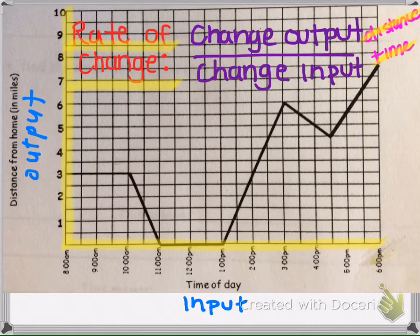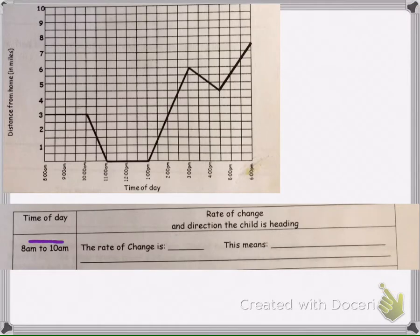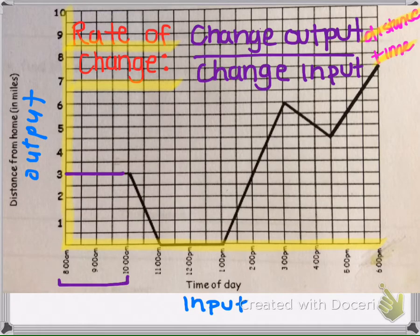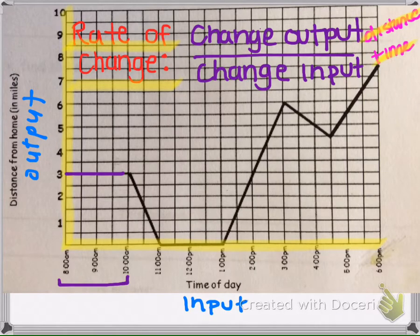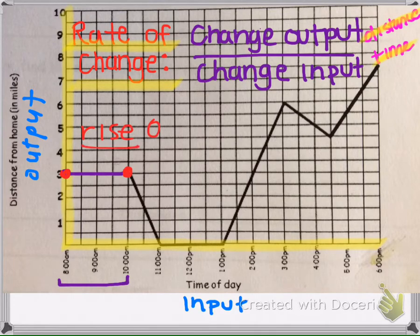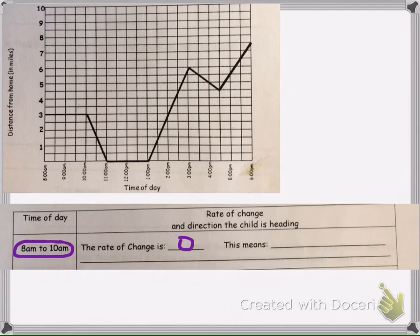Looking at the graph, from 8 o'clock to 10 o'clock there is a horizontal line. To find the rate of change from 8 to 10 a.m., a horizontal line has a rate of change of 0. Mathematically, using rise over run, if we pick two points, we would not have to rise at all to get from one point to the other. So the rise is 0, and the run is 4. Zero divided by 4 is 0, so our rate of change is 0.